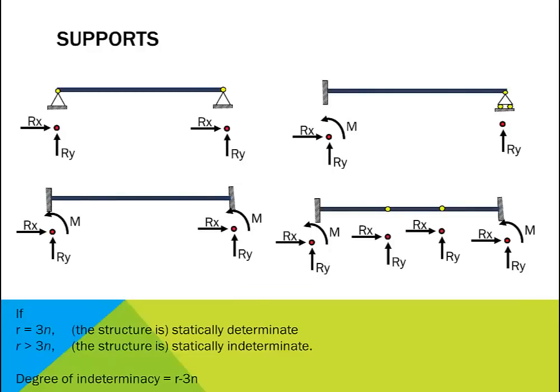If the beam has two pin supports, there will be four unknown support reactions. We don't have enough equilibrium equations to determine the values of four unknowns, so the beam is said to be indeterminate by one degree, because we need one extra equation.